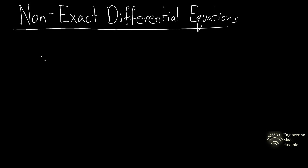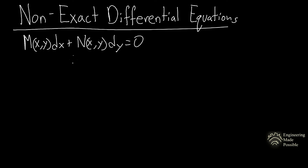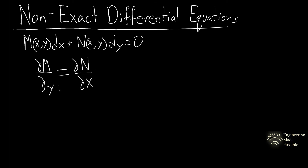Today we'll be going over non-exact differential equations. In the previous video we went over exact differential equations, which we saw of the form M(x,y) dx plus N(x,y) dy equals 0. They would be exact only if the partial derivative of M with respect to y is equal to the partial derivative of N with respect to x.